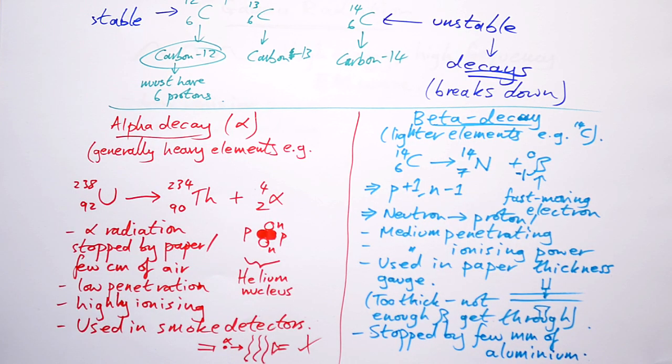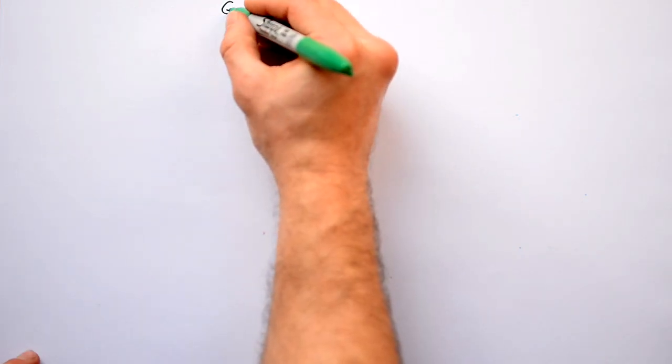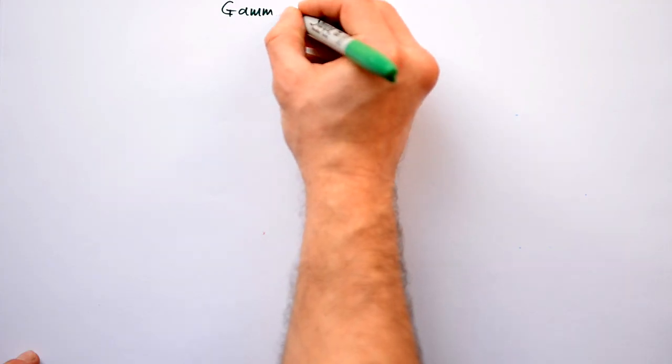Beta radiation is stopped by a few millimeters of aluminum. So it's stopped fairly easily.